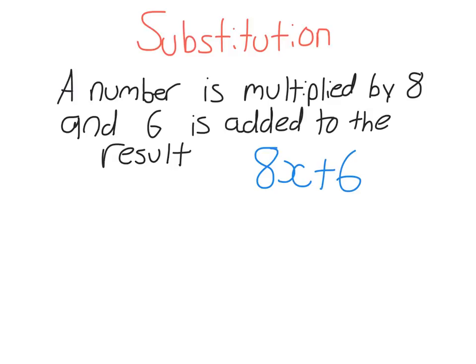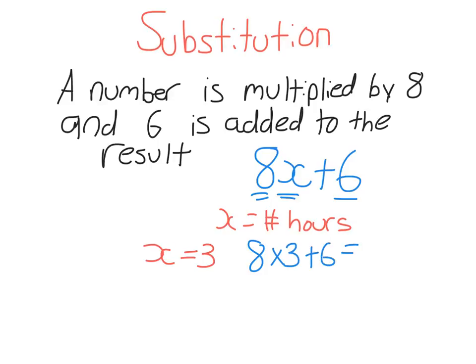This expression could represent something in real life. You're doing a job for your mum — if you work X hours and get paid $8 per hour, and she gives you an extra $6 just for starting the job, this expression represents how much money you're going to get paid. Substitution is where we take the pronumeral, the letter X, and give it a specific value. So if X equals the number of hours and X equals 3, then 8X plus 6 is 8 times 3 plus 6, and you would get $30 for that.